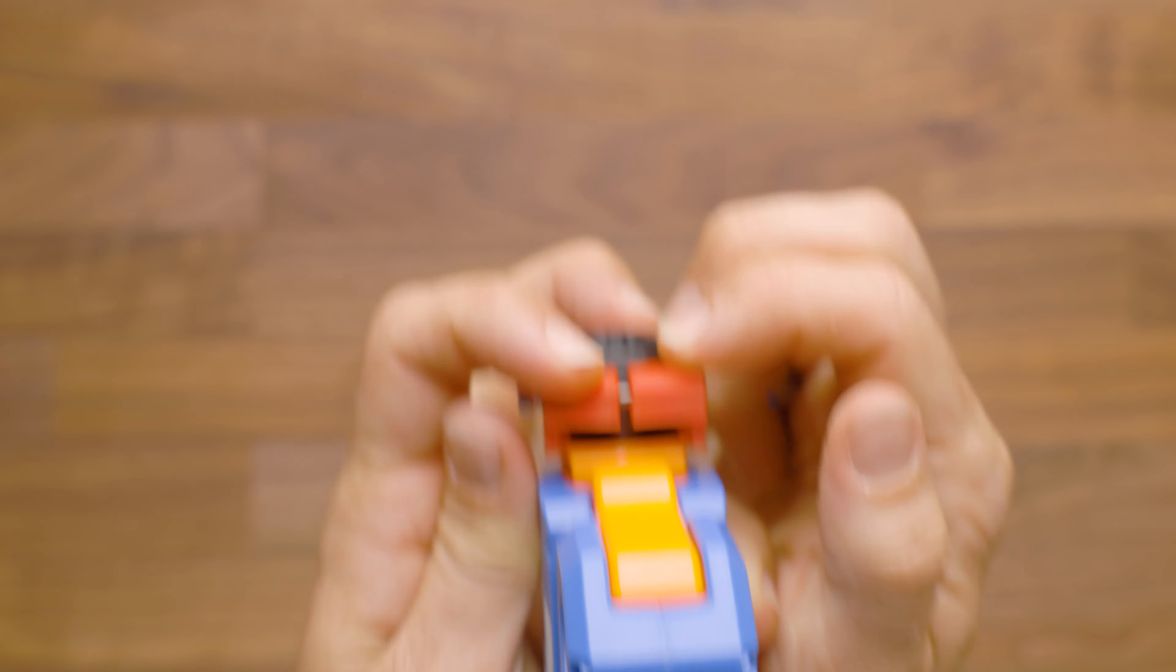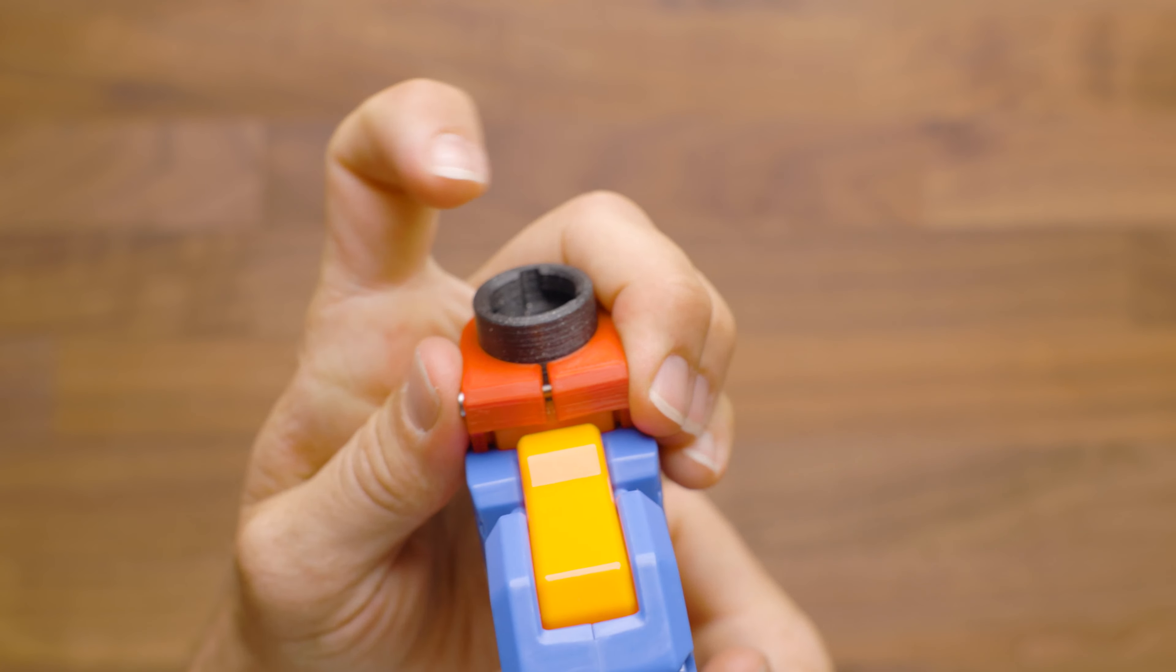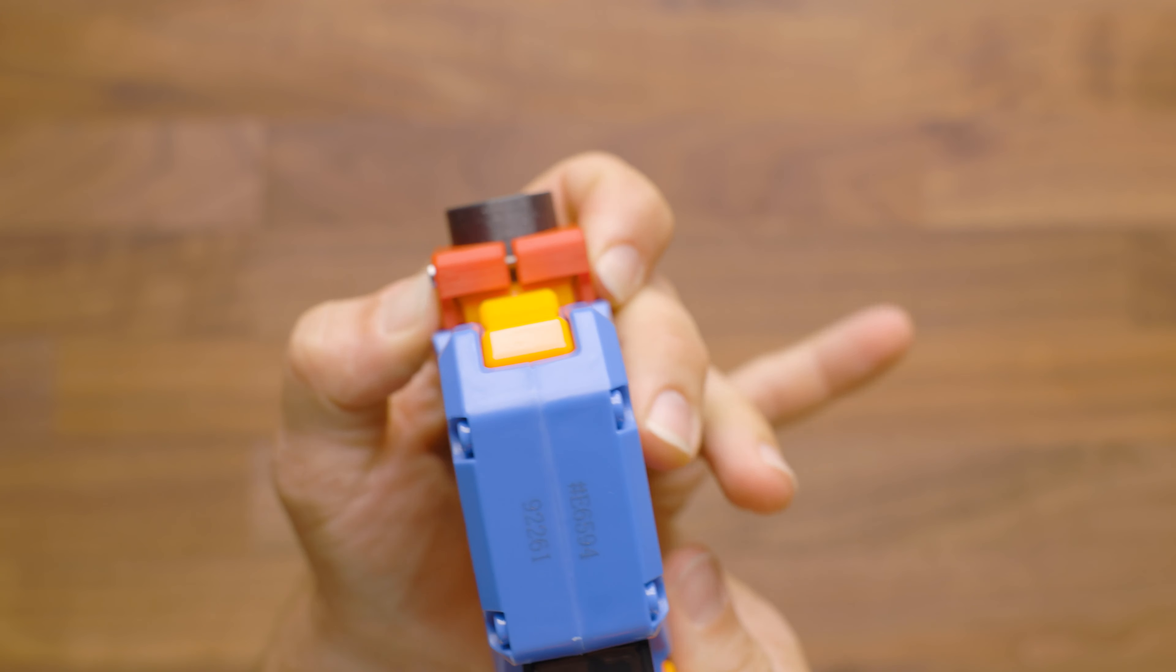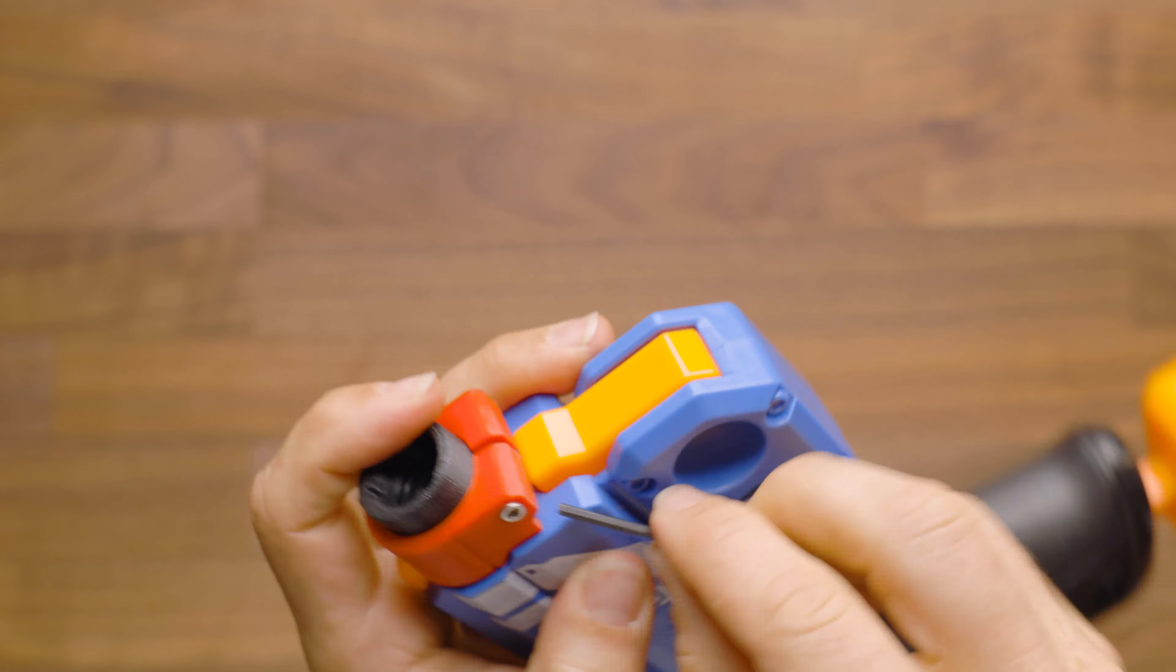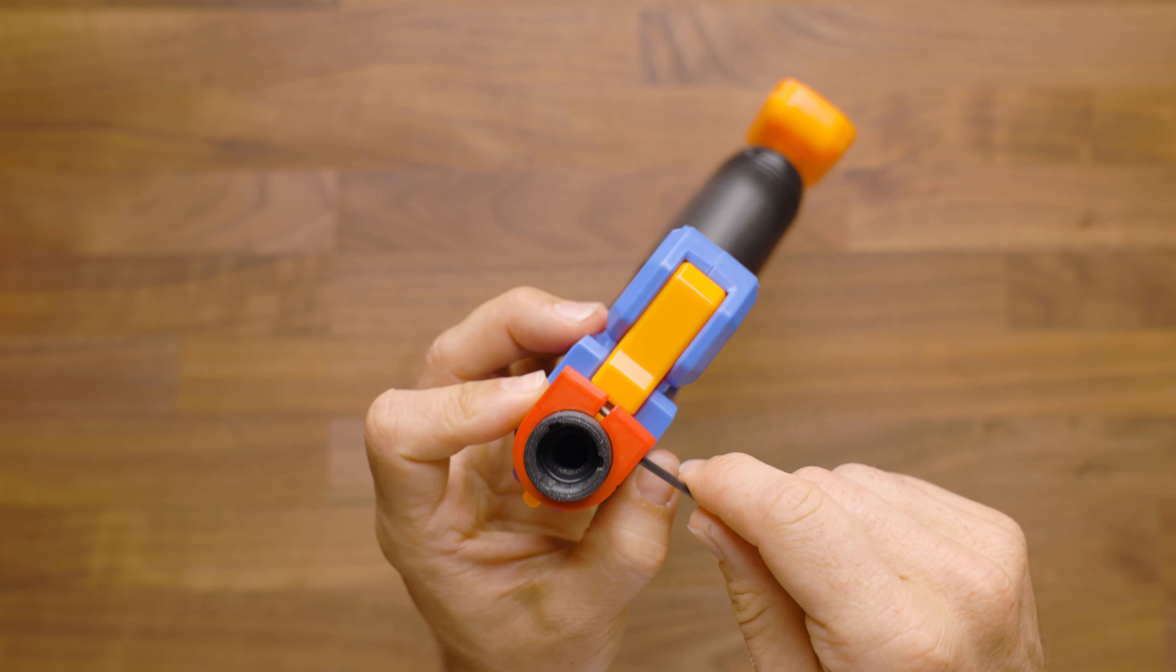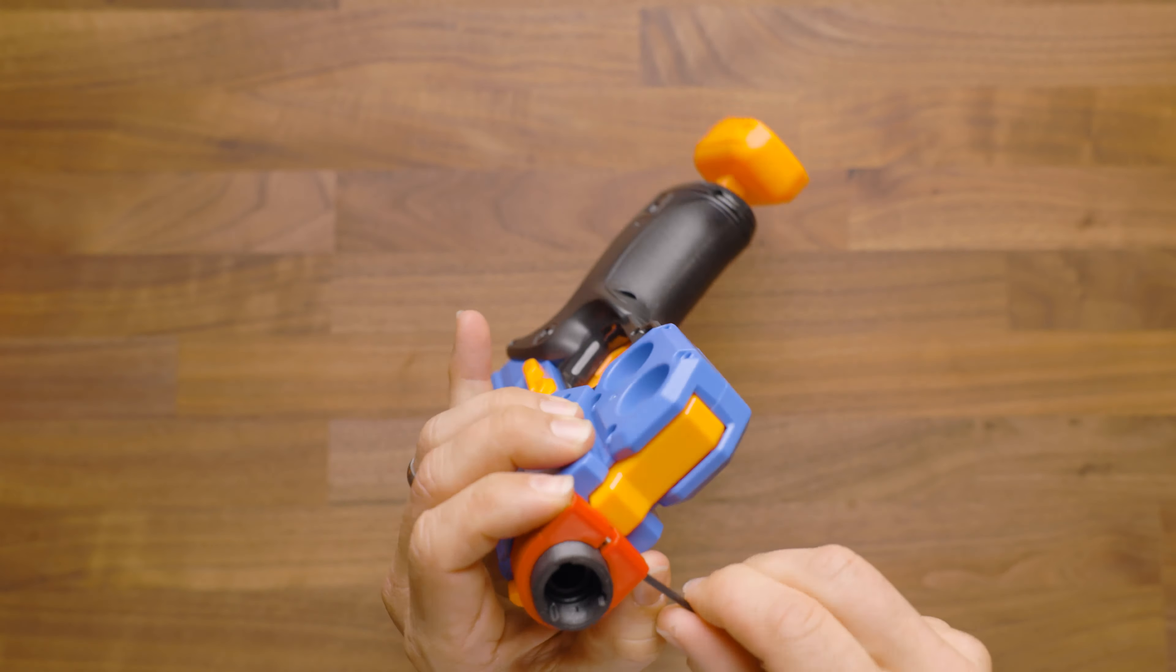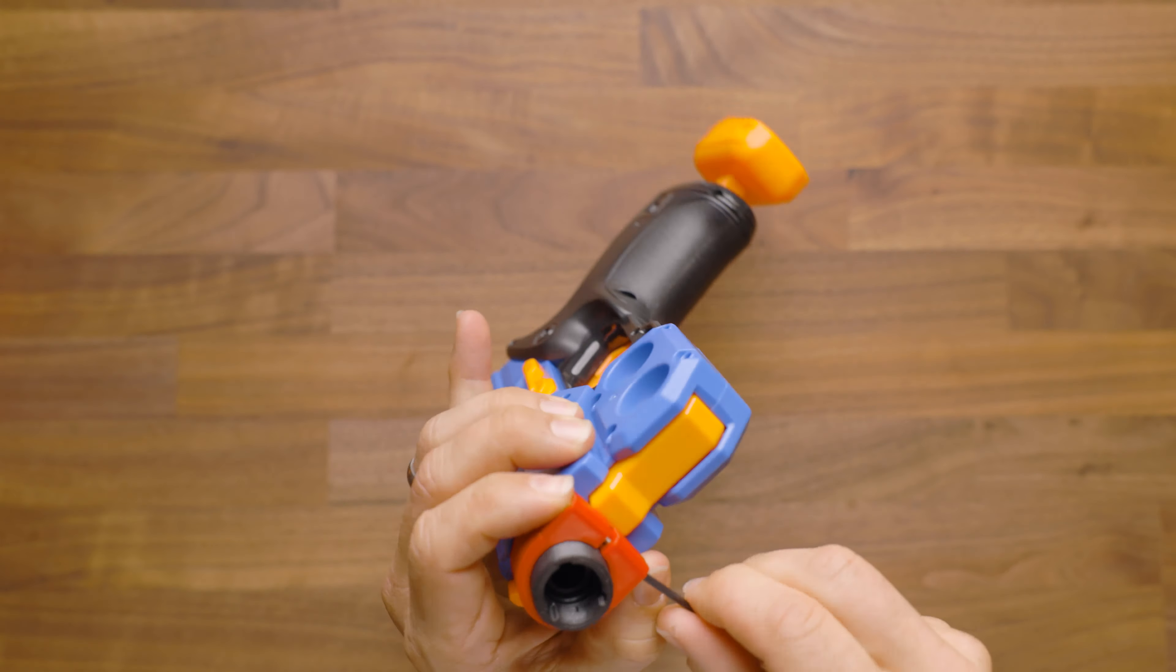You're essentially going to shove that all the way back in and then you're going to grab your front locking mechanism here and we're going to put this over the top. If your screw is tightened you're going to want to loosen it all the way. The reason for this is that you've got to get these locking tabs right here down into the blaster. So you just kind of pop it down in there. You can see those are locked in place and then you just simply tighten this up.